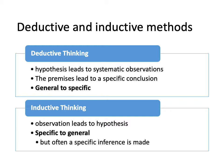In induction, on the other hand, it tends to be specific to general. This is where you make observations and draw some conclusions about the things you've observed — you make a hypothesis. So it tends to be specific to general, but we often talk about specific inferences or conclusions. So for now: deductive is general to specific; inductive tends to be specific to general.